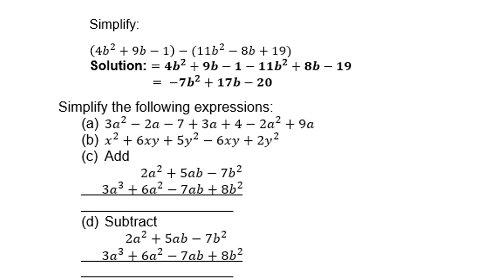Simplify the following: 4b squared plus 9b minus 1, in brackets, minus, open the bracket, 11b squared minus 8b plus 19. Again, the signs of the second bracket must change. So 11b squared becomes negative 11b squared. Minus 8b becomes plus 8b. And plus 19 becomes minus 19. Then you collect your like terms. The answer should be minus 7b squared plus 17b minus 20. Of course, alternatively, you can also use the calculator to add the coefficients.